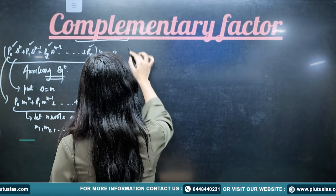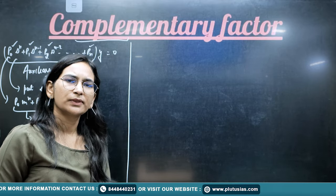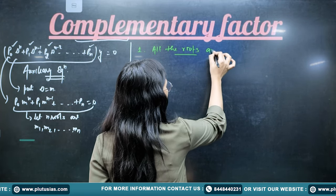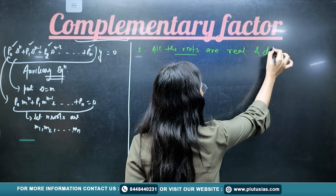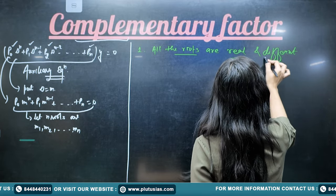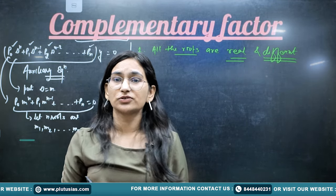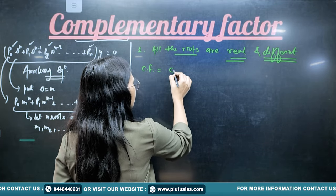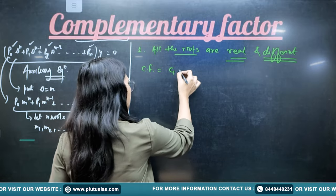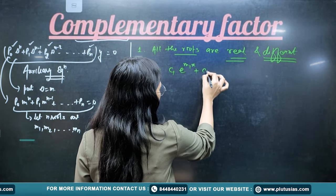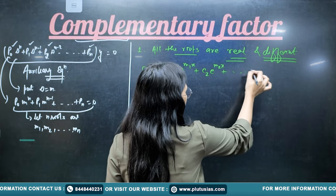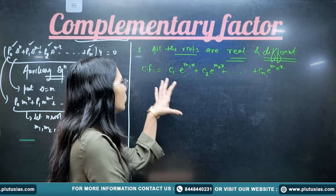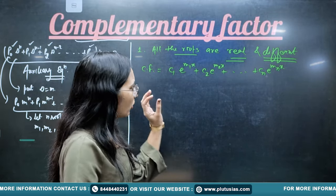If all roots are real and different, then the complementary factor is written as: c₁ e^(m₁x) plus c₂ e^(m₂x) up to cₙ e^(mₙx). Simply find the roots, write each as e raised to power m times x, and you get the solution — that is the complementary factor.